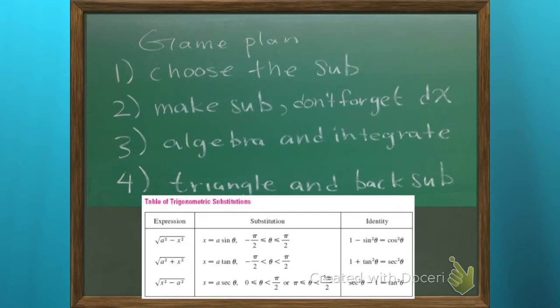How do you choose the appropriate sub? You're using trig sub when you have roots. So we're getting all radical on this. What do I mean? If you have a squared minus x squared underneath your root, then you choose x to be a sine theta.